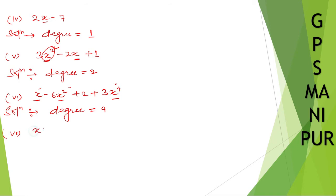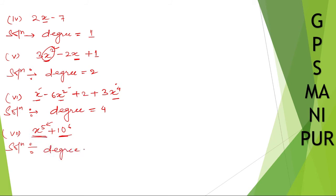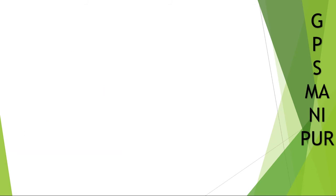Roman number 7: x to the power 5 plus 10 to the power 6. So what is the degree here? You may think the degree is possibly 6 because it is the highest number, but always keep in mind the degree will always be of the variable. 10 is a constant number, so degree is 5.